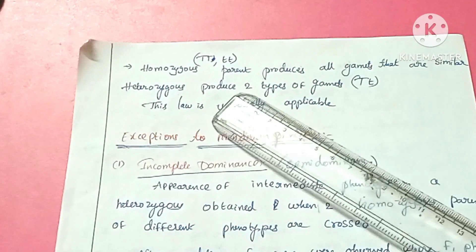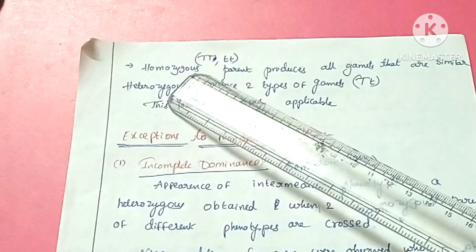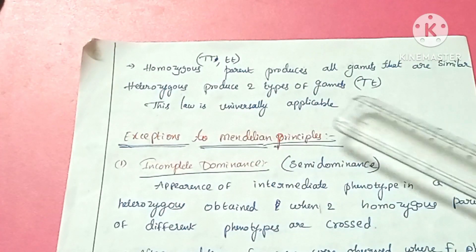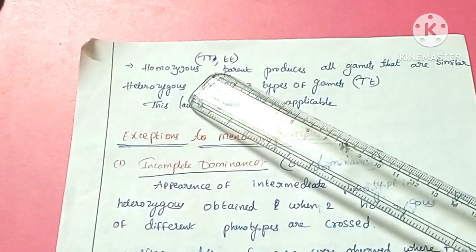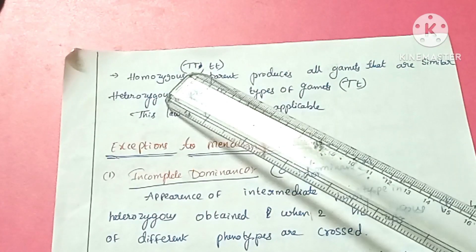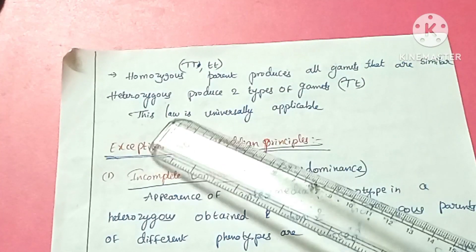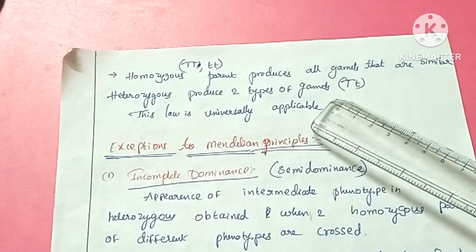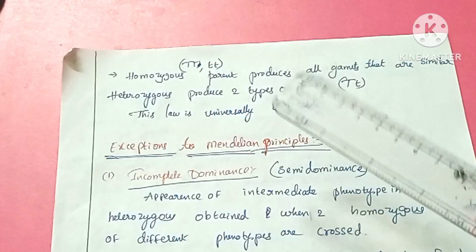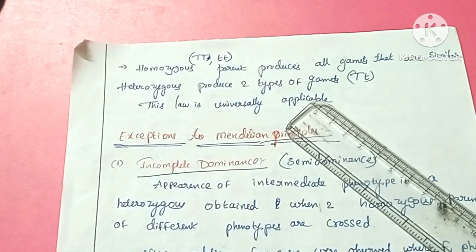Homozygous parents produce all gametes that are similar. For example, a homozygous tall parent capital T capital T produces only capital T gametes, and a dwarf parent small t small t produces only small t gametes. But heterozygous parents produce two types of gametes: capital T and small t. This law of segregation is universally applicable, but the law of dominance is not universally applicable.